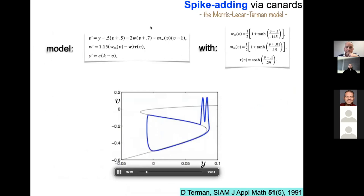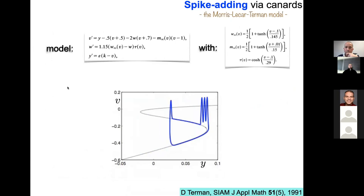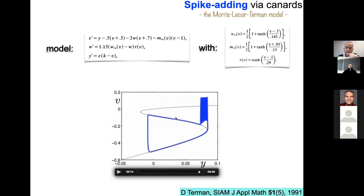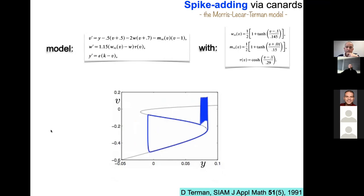A biophysically similar example is the Morris-Lecar model with a linear third equation, studied by David Terman for spike adding. The computed cubic critical manifold shows cycles that add more and more spikes upon parameter variation, each time visiting trajectories that stay close to the repelling site — canards. Multiple canard explosions ultimately produce cycles with a burst of spikes — proper bursting cycles.